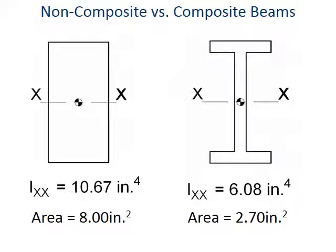Now we're assuming here in this example that the composite beam started off as the same dimensions as the rectangle, and we've essentially just removed some of the material. So that allows us to make an apples to apples comparison.